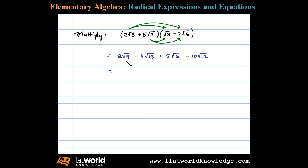We next simplify each term. Two times the square root of nine is two times three, minus four times the square root of eighteen. Here eighteen is nine times two, so the square root of eighteen simplifies to three square root of two, plus five square root of six.